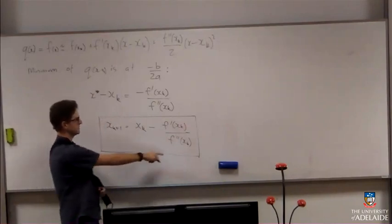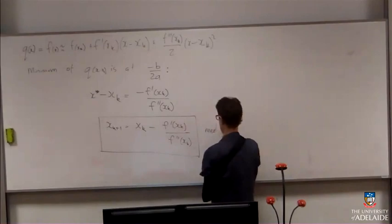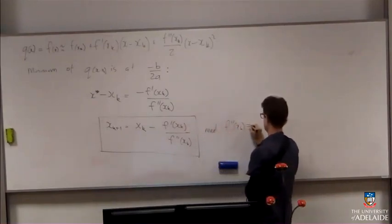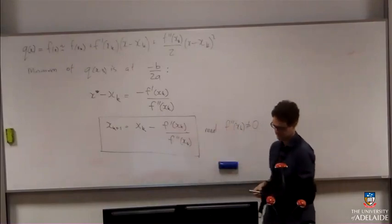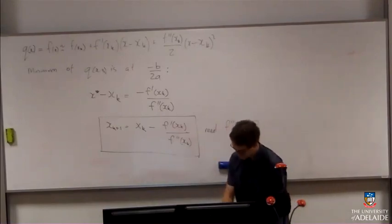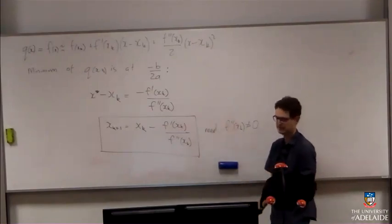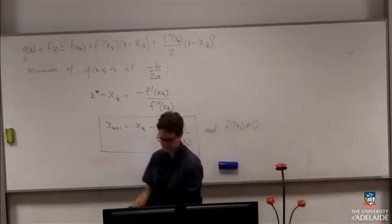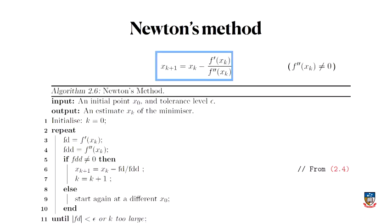All right? Now, I need to have something here. I need to have that that's not equal to zero. All right? Because otherwise, this will break. I'll have a zero on the denominator here. But otherwise, there's an algorithm for finding the minimum of some function.